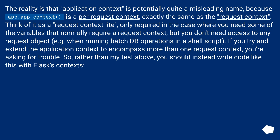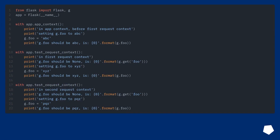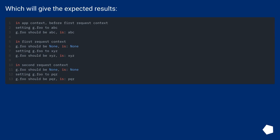The reality is that the application context is potentially quite a misleading name, because app.app_context() is a per-request context, exactly the same as the request context. Think of it as a request context lite — only required in the case where you need some of the variables that normally require a request context, but you don't need access to any request object, for example when running batch database operations in a shell script. If you try to extend the application context to encompass more than one request context, you're asking for trouble. You should instead write code like this with Flask's contexts, which will give the expected results.